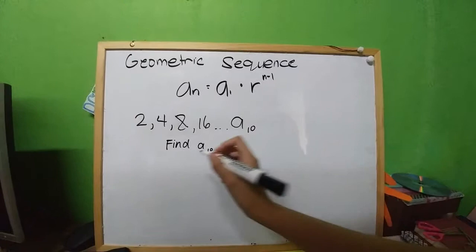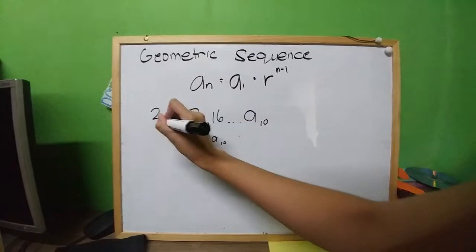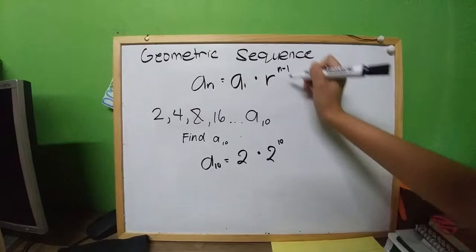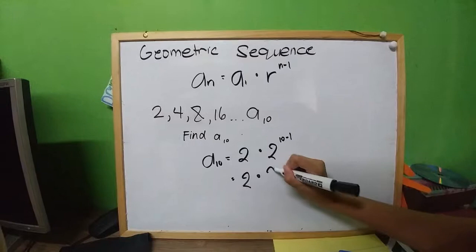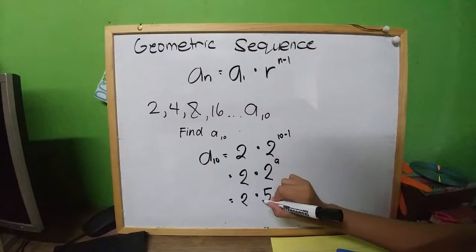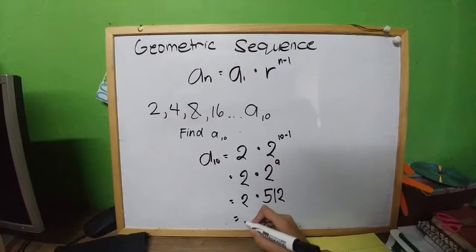Calculating the tenth term: 512 times 2 equals 1024. So a sub 10 equals 1024.